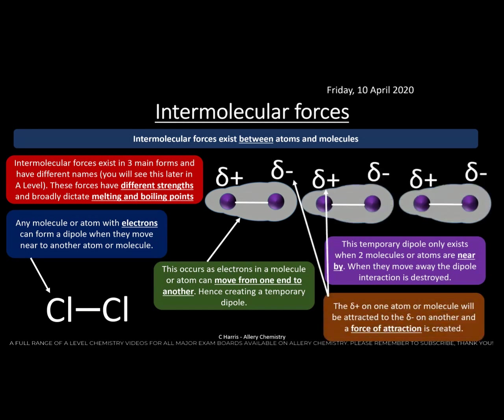When molecules move away, the interaction is destroyed. Here we've aligned three chlorine molecules together — they have a small polarity between the atoms. As one chlorine molecule approaches another, the electrons move to one side, creating an electron deficiency on the other side. This has a knock-on effect: you get a delta negative and a delta positive — the Greek letter delta meaning 'small charge.'